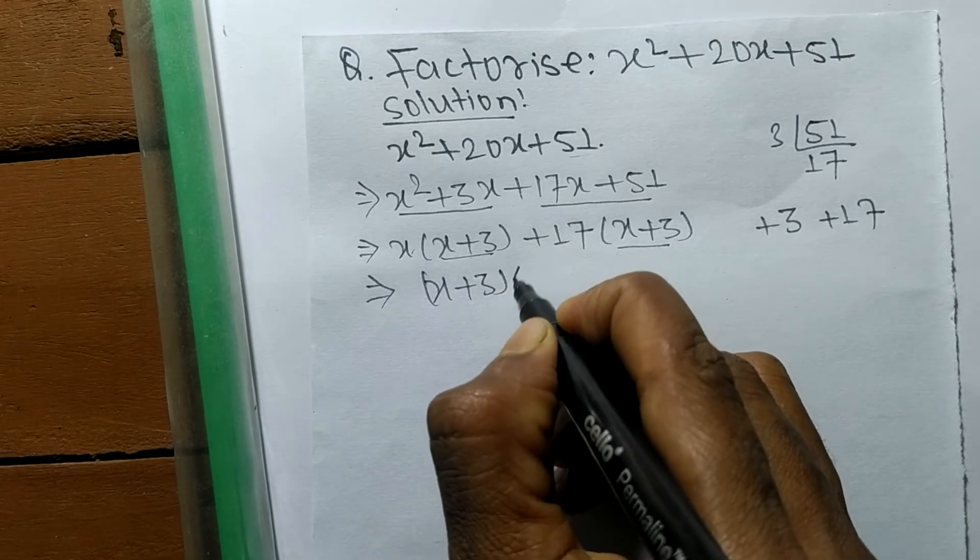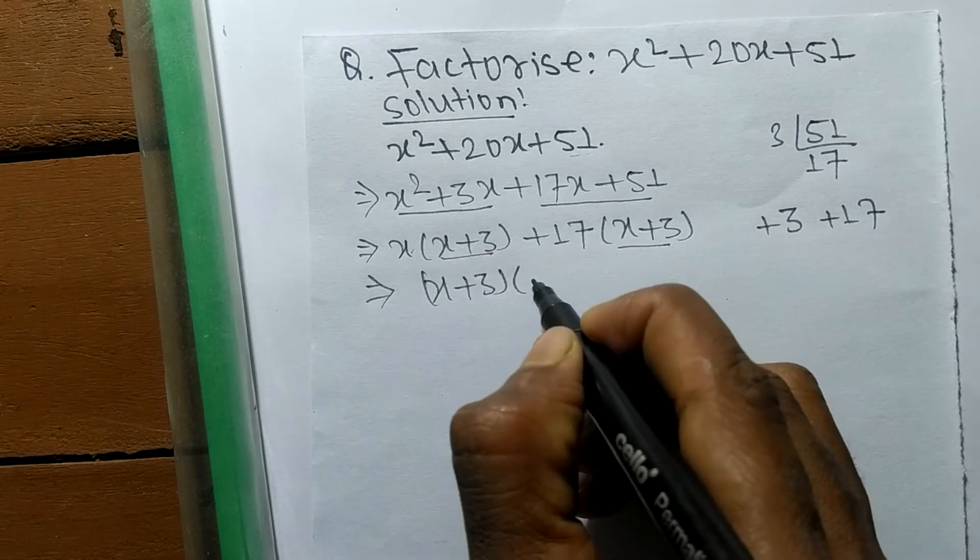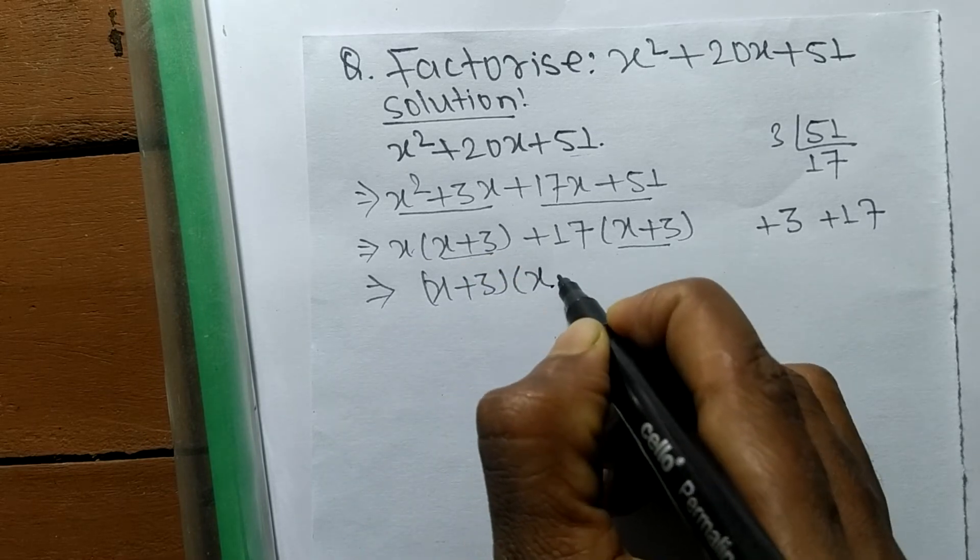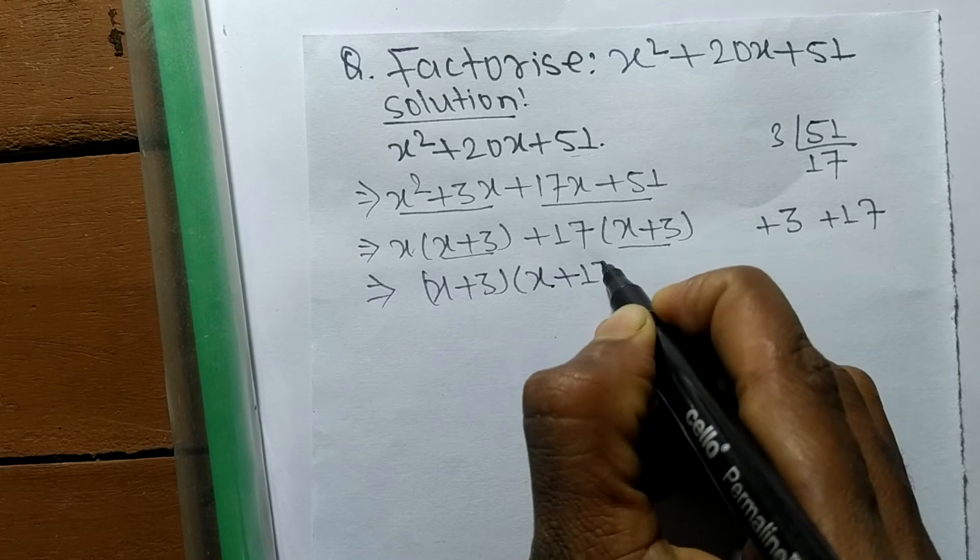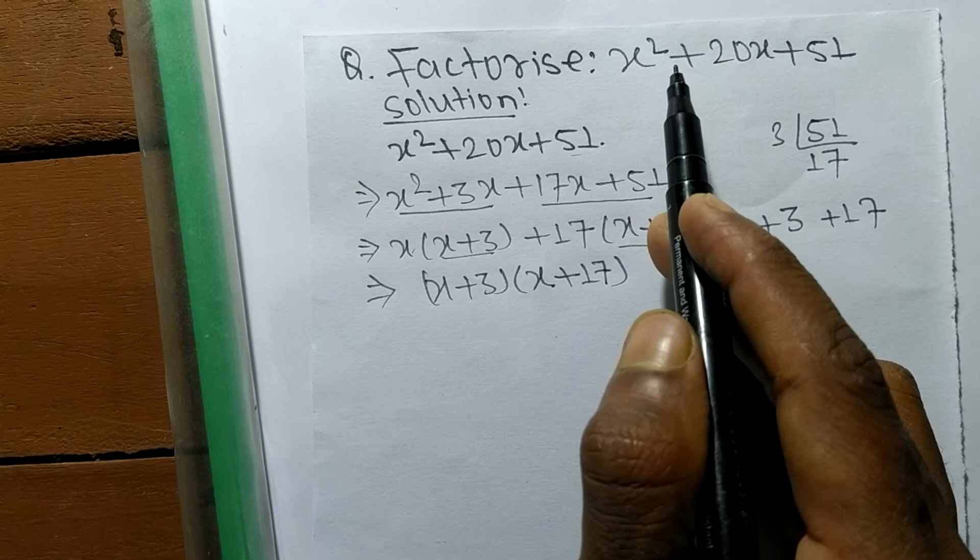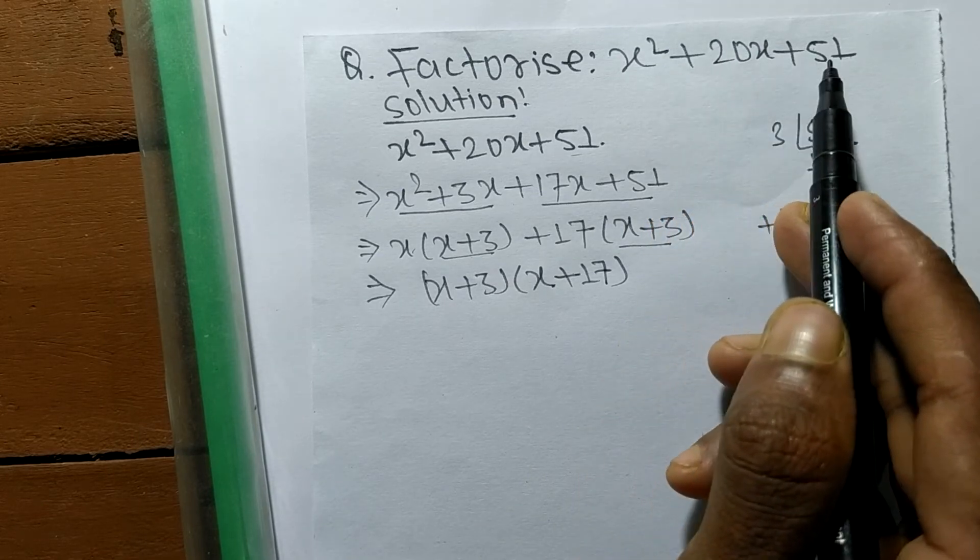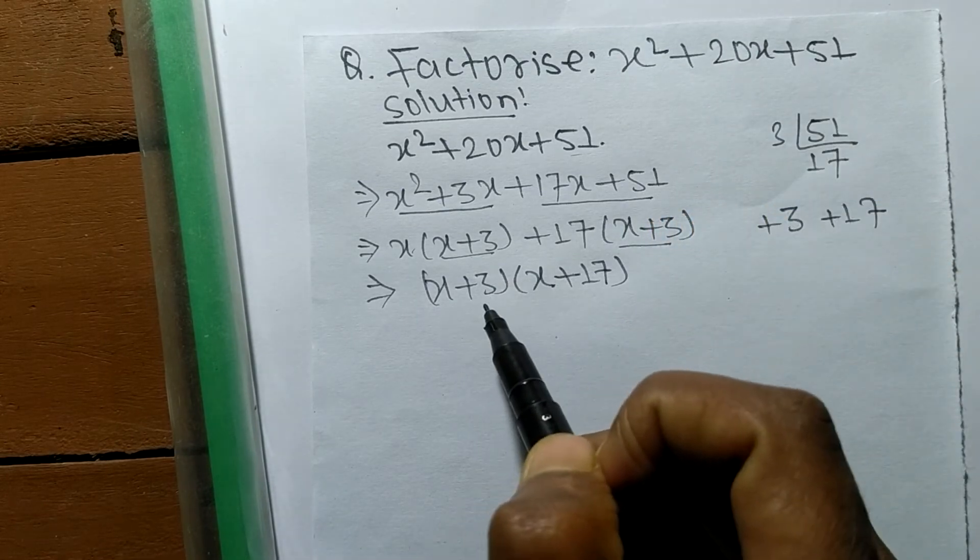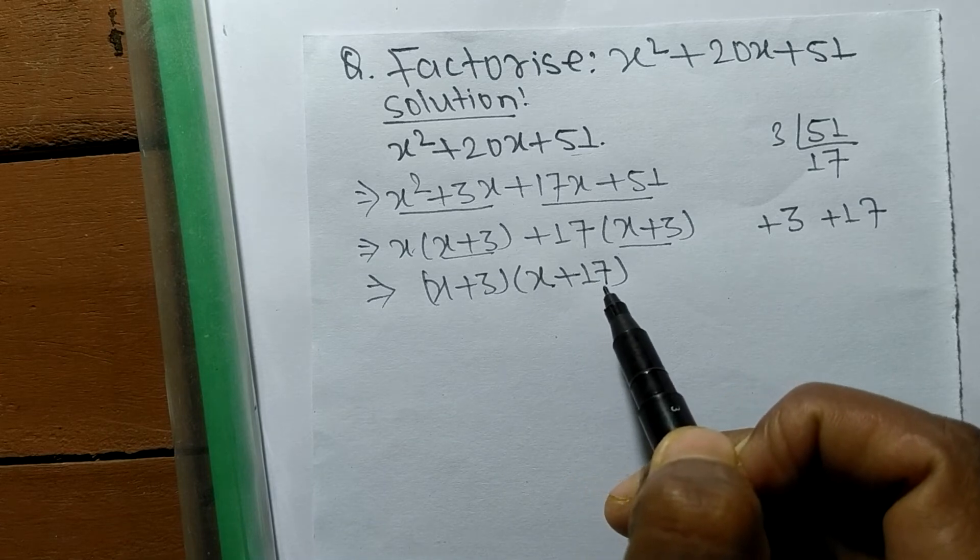We also have to write the remaining terms. In the first there is remaining x and in the second remaining is 17. So the factors of x² + 20x + 51 are (x + 3) and (x + 17).